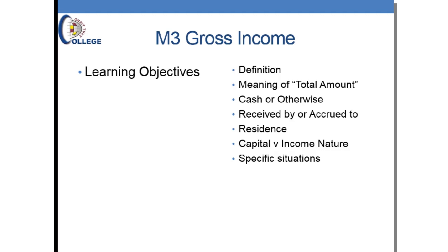We are going to deal with the full definition first. The full definition says: gross income is the total amount, in cash or otherwise, received by or accrued to a person residing or non-resident of South Africa, and that amount must never be capital in nature — it must be revenue in nature. In your textbook these components are broken down in bullets, but when you read them together they form the definition of gross income.